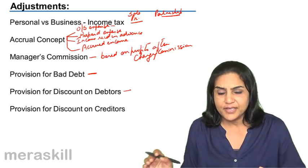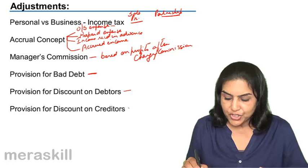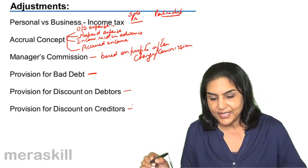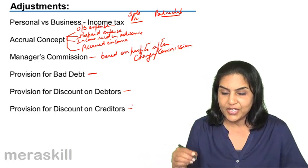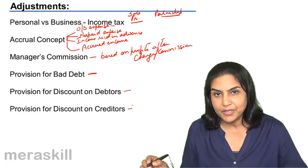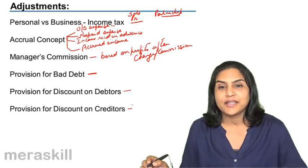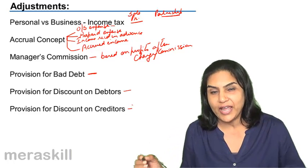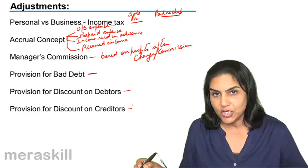There is another term, the provision for discount on creditors. This strictly speaking, violates the conservatism concept, which says that while we provide for all expected or anticipated losses, we should not recognize any anticipated incomes.